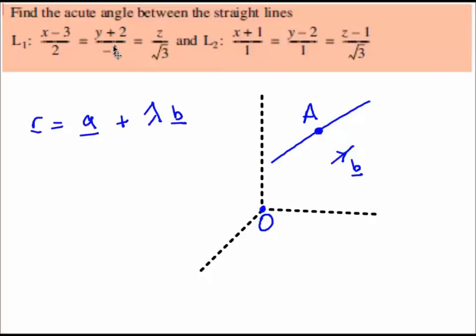Just to remind you about vector form: here's the vector form of a line, which is exactly the same for three dimensions as it was for two. We have a point on the line and we've got a direction that's parallel to the line. To describe that line, we get to a point on the line A and we move along B — a multiple of the vector B — and that will describe any point at all along that line.